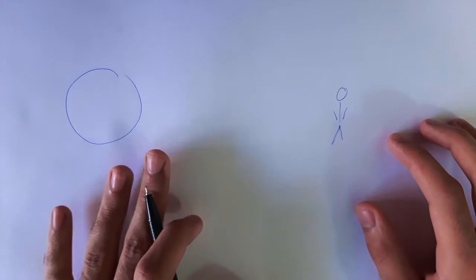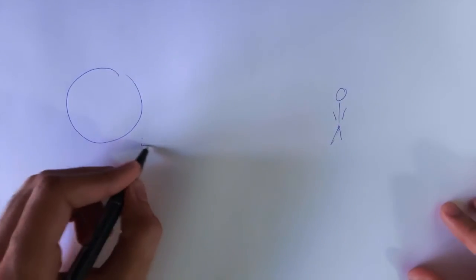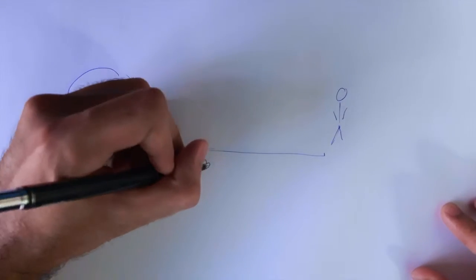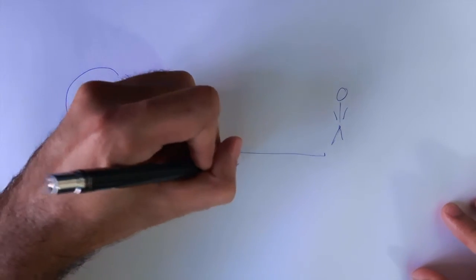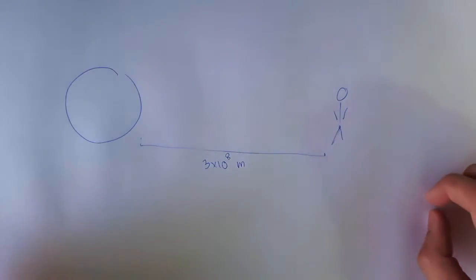But Einstein had other thoughts about it and he argued no, this is why. Suppose the distance between you two is 3 × 10^8 meters, so light would actually take one second to get from here to here.